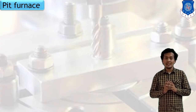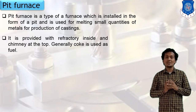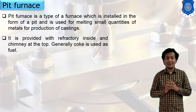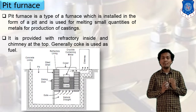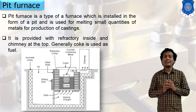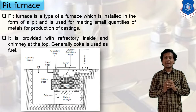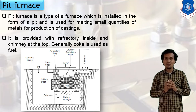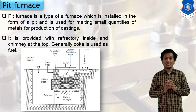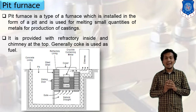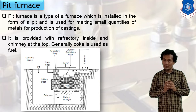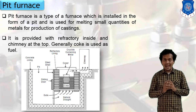The pit furnace is constructed below the ground level. A high quantity of charge can be melted with this furnace. The whole furnace is built underground, and refractory brick lining is used so that it can withstand high temperatures. The fuel is fired, and the charge is converted into liquid form inside the vessel or crucible.